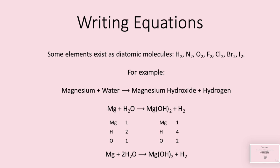Lastly we look at writing equations. A key fact before we start is that some elements exist as diatomic molecules. This means they travel around in pairs. The ones you should be aware of are hydrogen, nitrogen, and oxygen as well as all the halogens, those in group seven. So fluorine, chlorine, bromine and iodine.